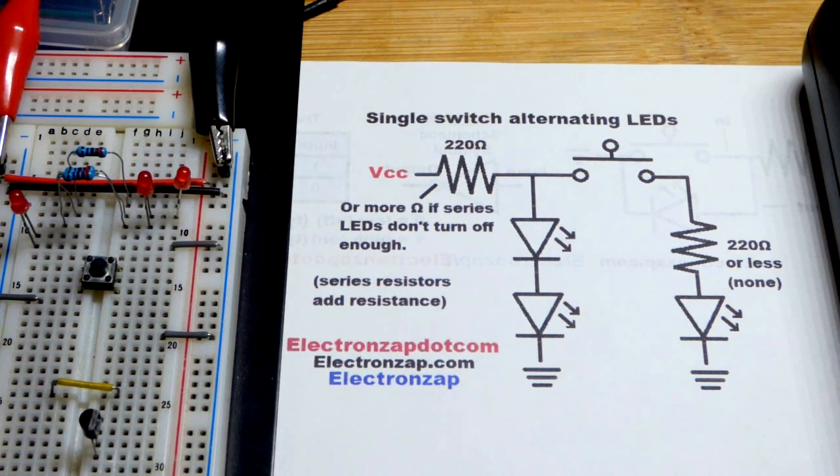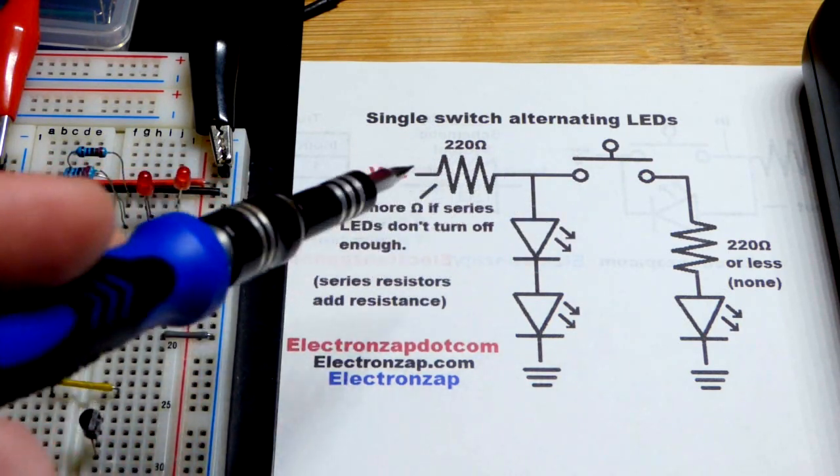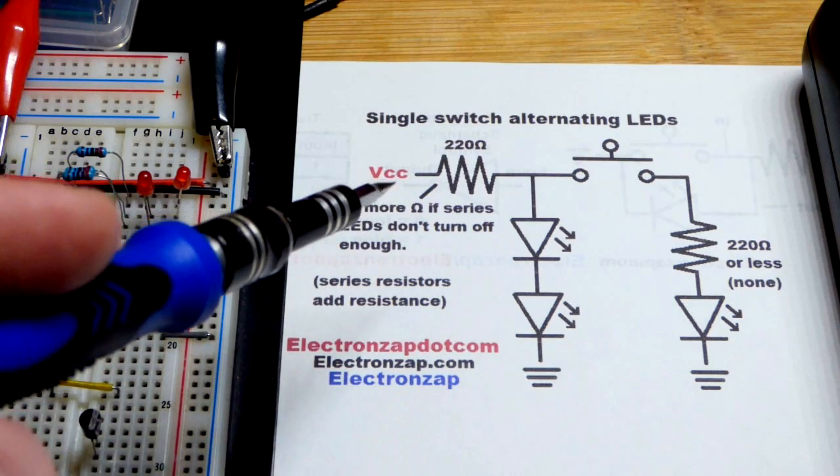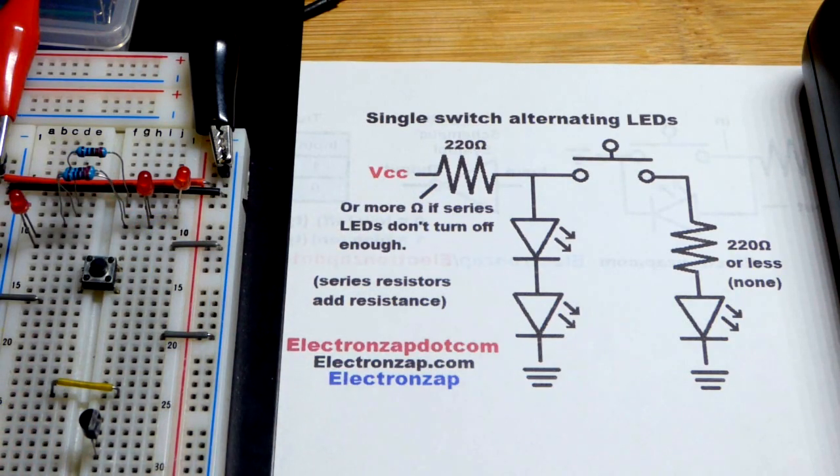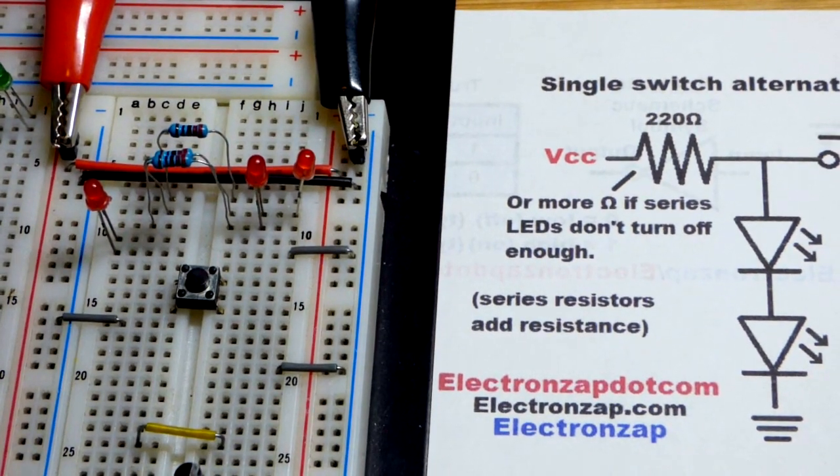So anyways, let's begin with the build. So we got the switch. We have a resistor, at least one here. We'll talk about that later. Coming from the positive side of the power supply. So we'll do that real quick right here.